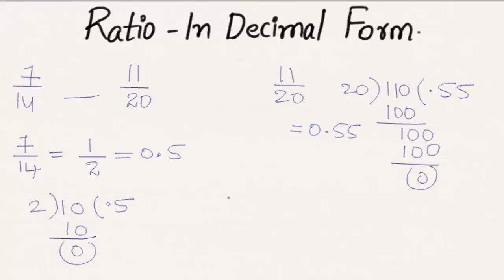Now let us compare both decimal numbers. We write 0.50 and 0.55. Comparing the hundredths place: 0 is less than 5, so 0.50 is less than 0.55. Therefore, 7/14 is less than 11/20.